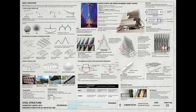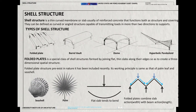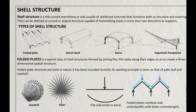Shell structure is defined as a curved or angled structure capable of transmitting loads. It functions both as structure and covering. The types are folded plate, barrel vault, dome, and hyperbolic paraboloid.